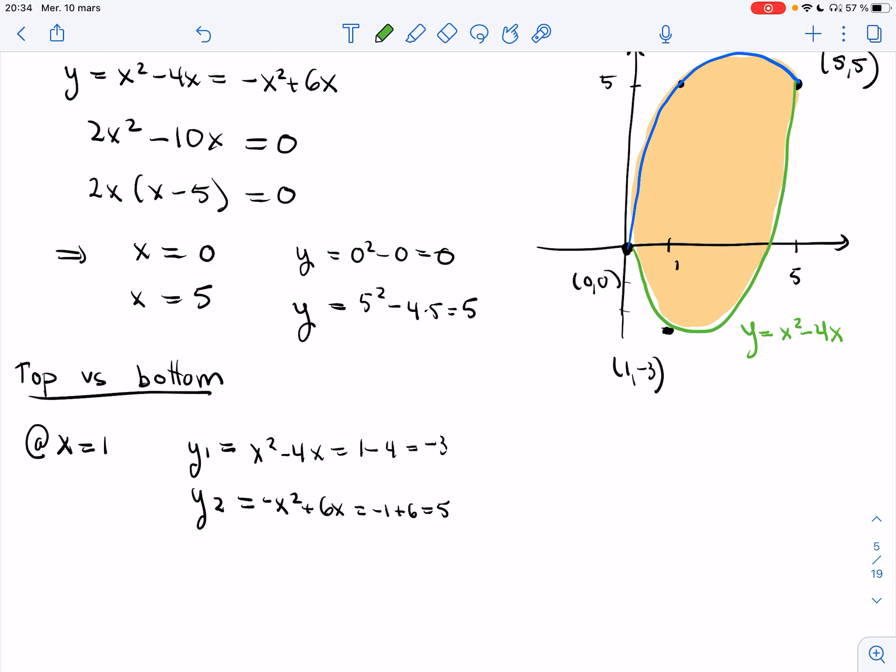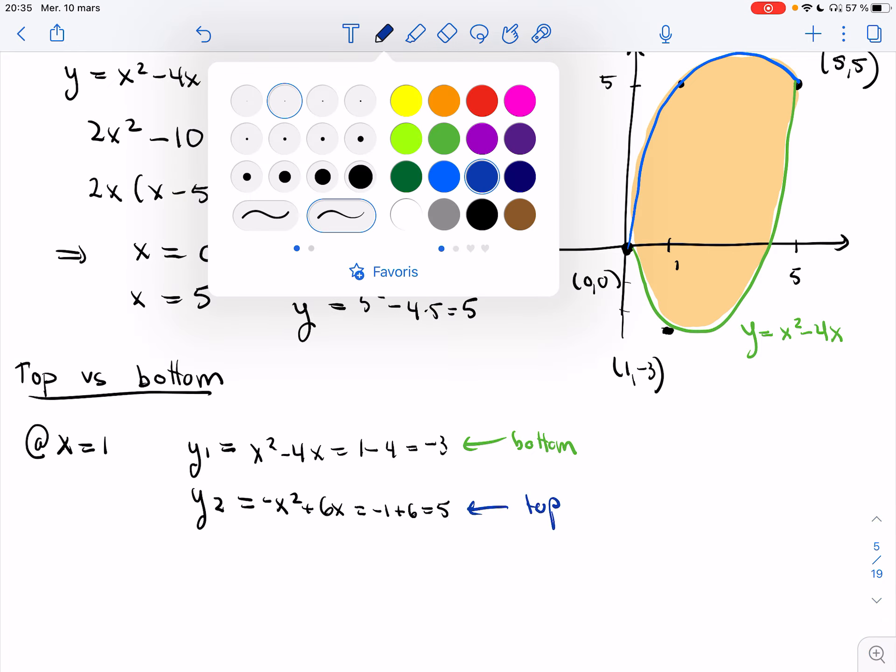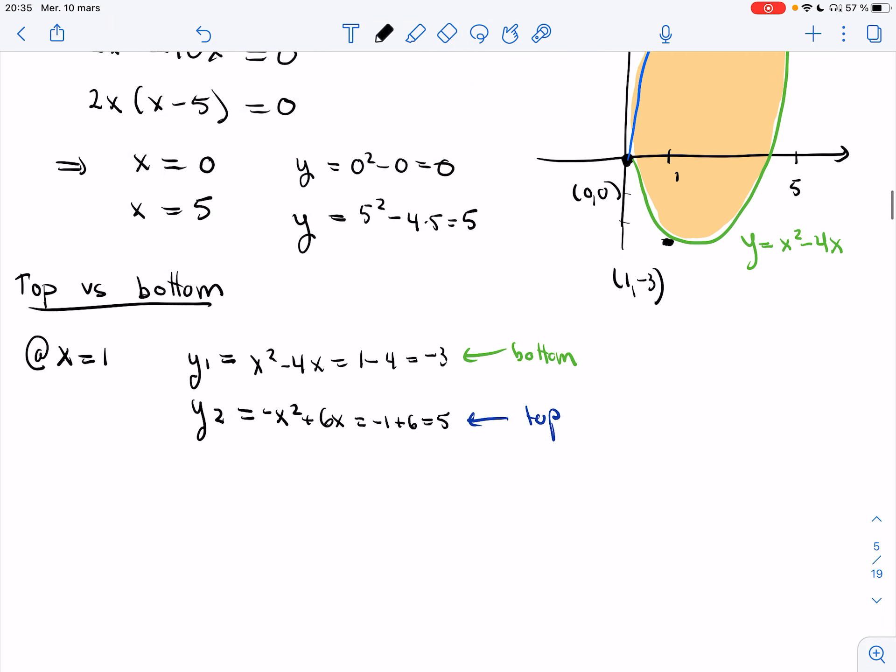Okay, so here we figured out that this one was bottom. And this one was top. For the whole interval from 0 to 5. Alright, so at this point, we're ready to set up the integral to find the area of this region, R.